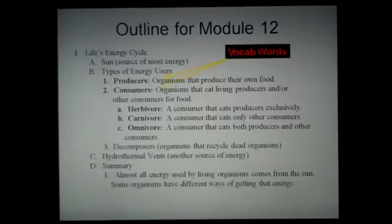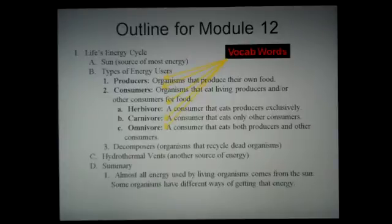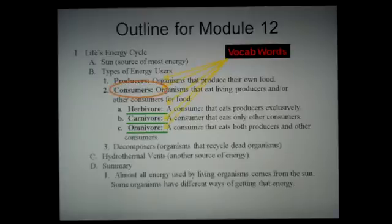Notice that all the vocabulary words are listed here along with their definitions. But notice again that they're not just listed 1 through 10 — they're listed according to where they fit in the module. For example, the three words herbivore, carnivore, and omnivore are all examples of types of consumers, and therefore they are listed A, B, C under consumers.